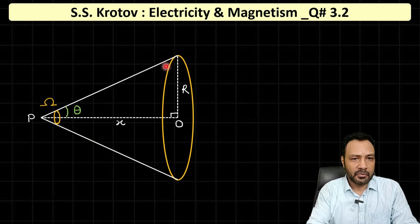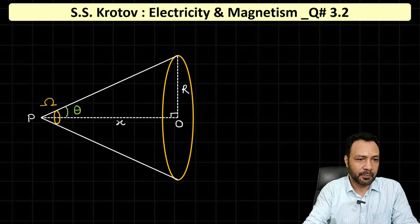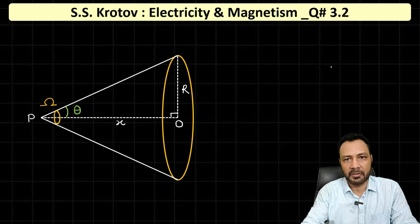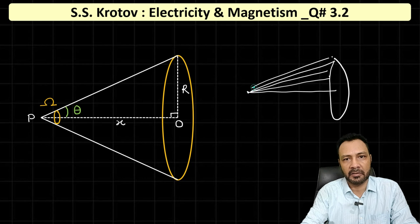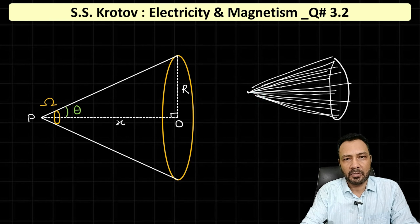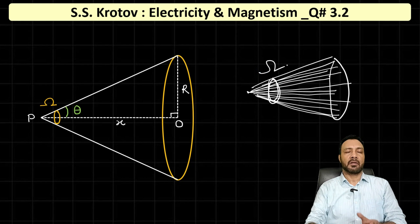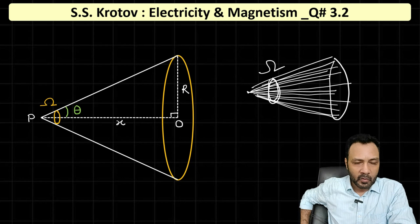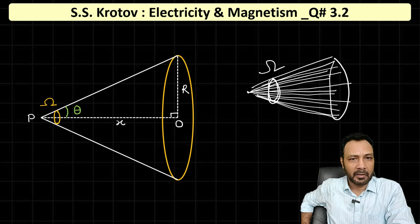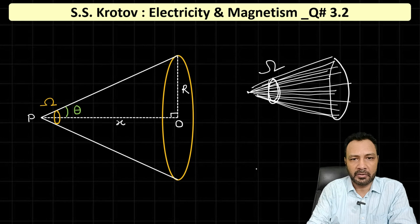The solid angle concept is easy. Suppose there is a ring of radius r with center O, and P is a point on the axis. If I join each point of the ring to that point P, a solid angle — a kind of 3D angle — is formed at that point. That 3D angle is called the solid angle. Just as we define the plane angle in radians, to define a solid angle we need the concept of a sphere.